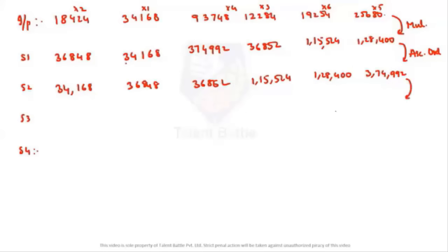Continuing the ascending order: next is 1,15,524, then 1,28,400, and the highest is 3,74,990. Now from step two to step three, you already know the algorithm — it's the digital sum. The digital sum of 34,168 is 3+4+1+6+8 = 22.